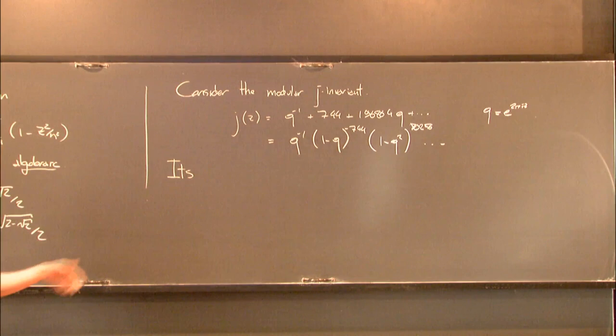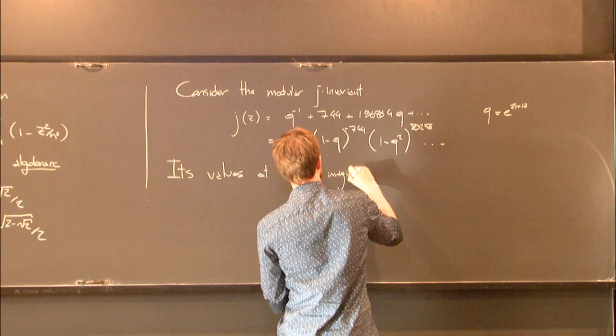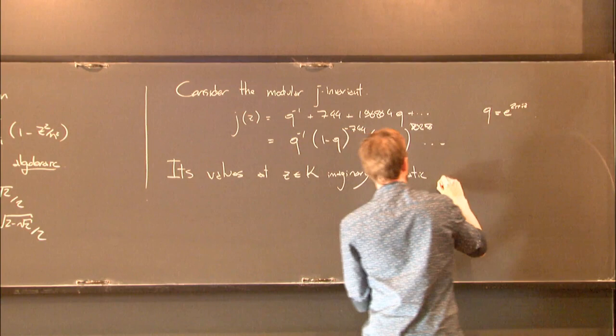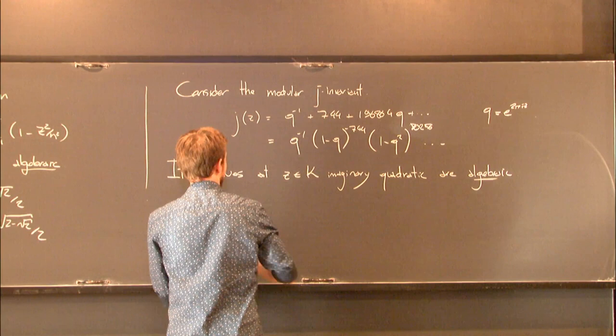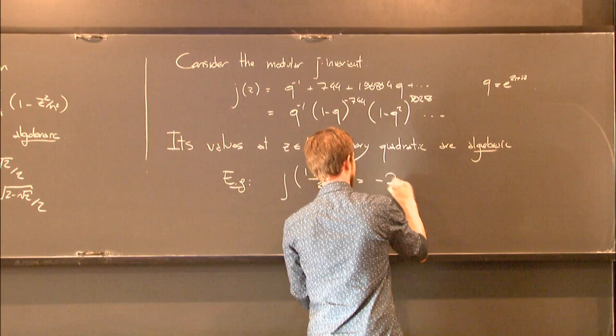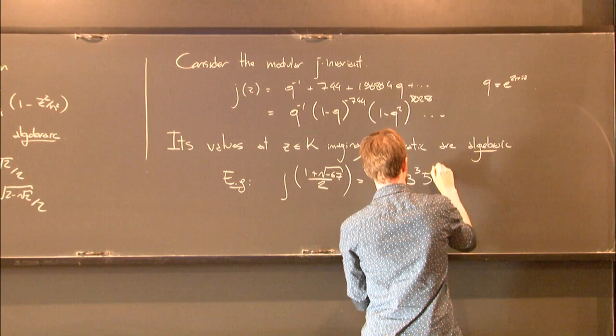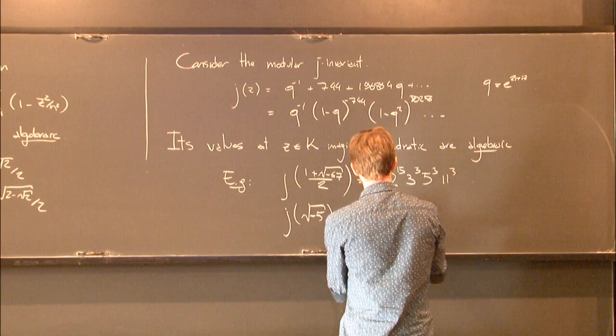This particular infinite product has a very similar behavior in the sense that its values, this time at arguments in imaginary quadratic fields, are also algebraic. Just to give you a couple of examples: if you take the j invariant of (1 + √(-67))/2, you end up getting an integer—a very special one. If you factorize it, you get this number. Another example would be the j invariant of i√5, which turns out to be this number.